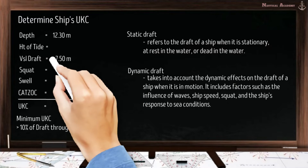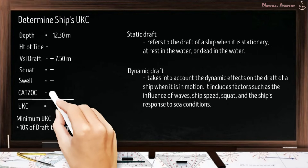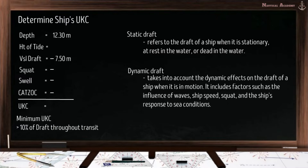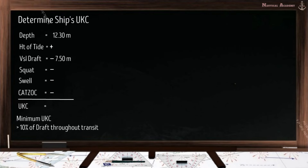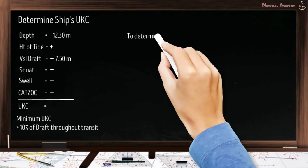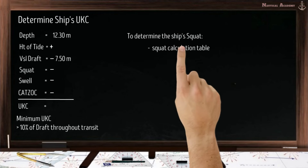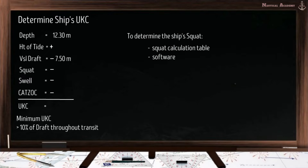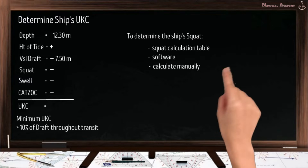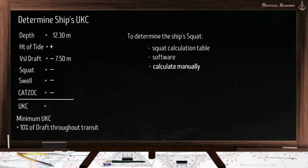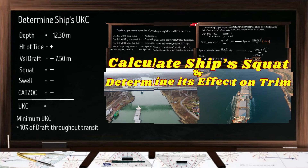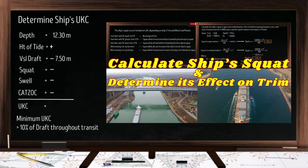The value of the ship's draft, squat, swell, and zone of confidence will be subtracted from the depth of the water to find the ship's UKC. The only value that will be added to the depth is the height of tide. Next, we will proceed to the ship's squat. To determine the squat, we can use a squat calculation table or software, or we can calculate it manually. In this video, we will calculate the squat manually. I have made a separate video on how to calculate the ship's squat — kindly check the link in the description.